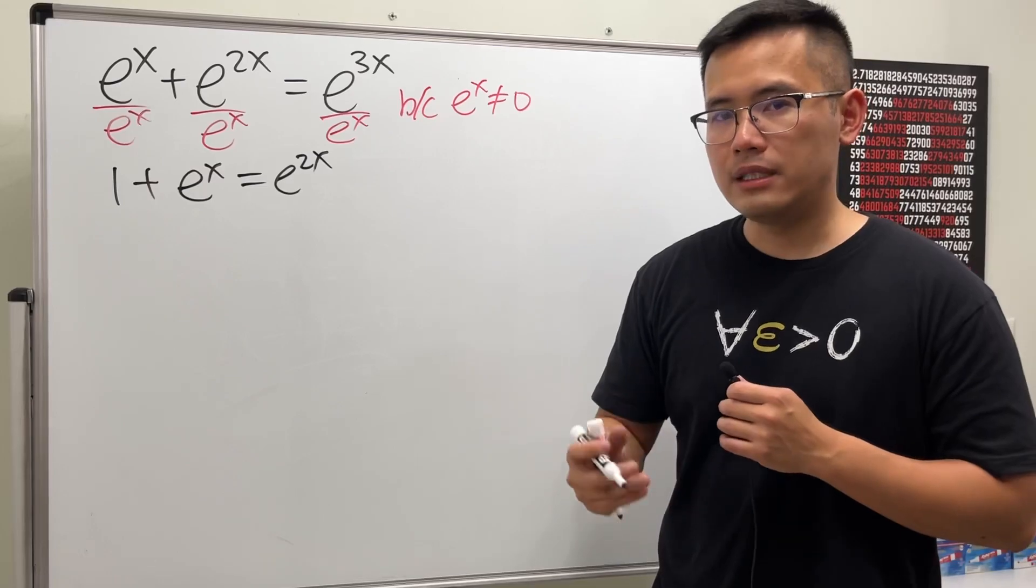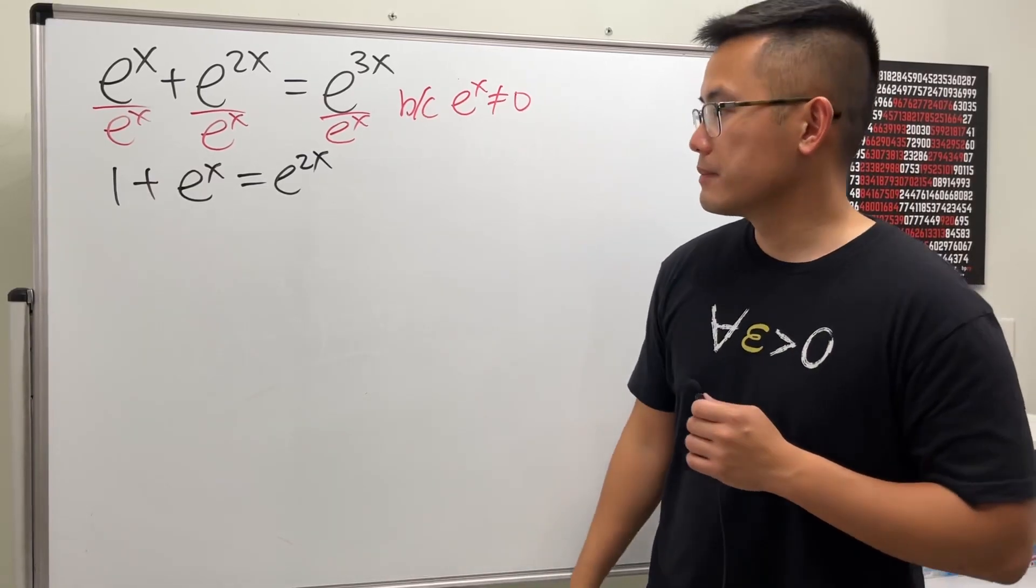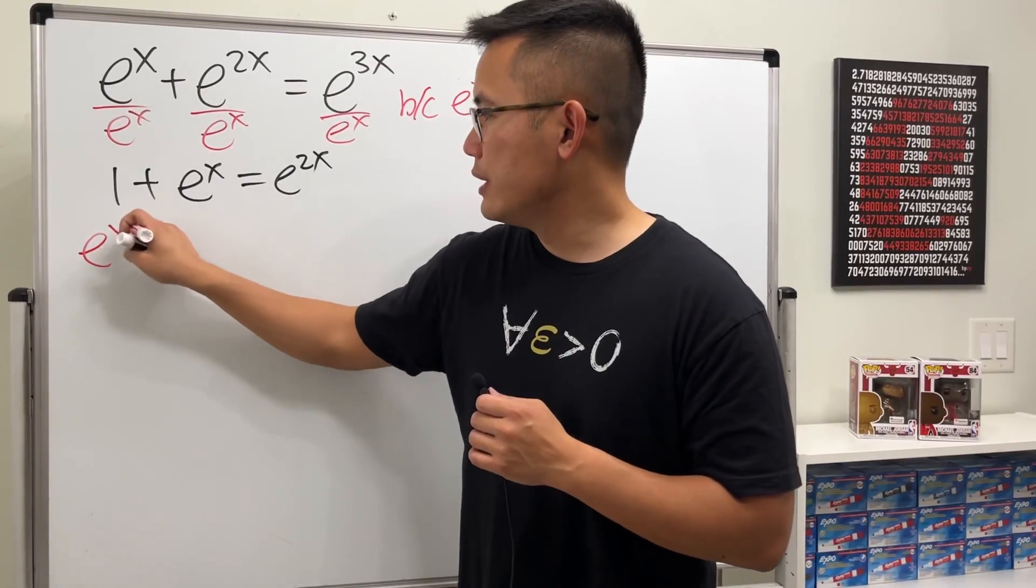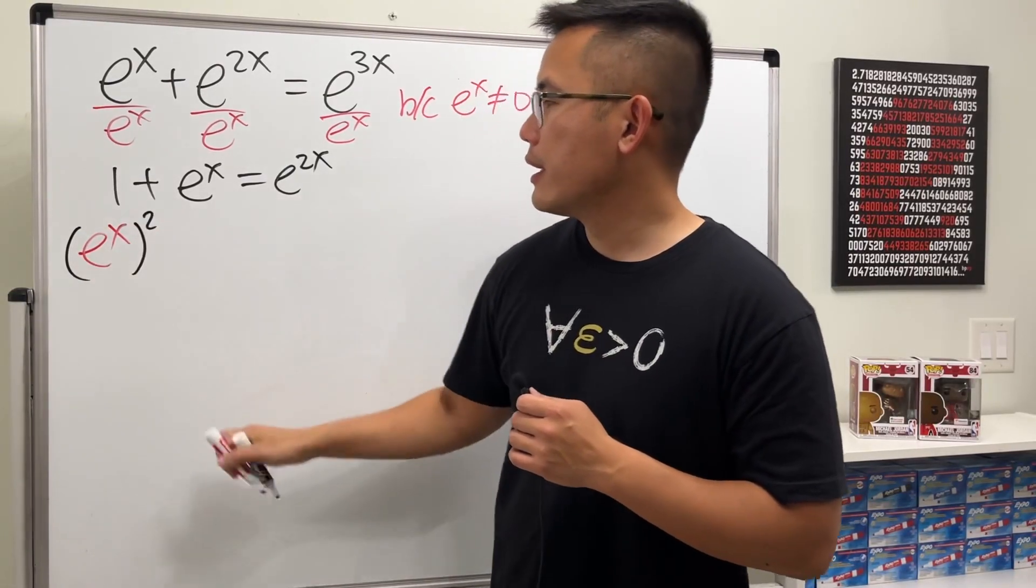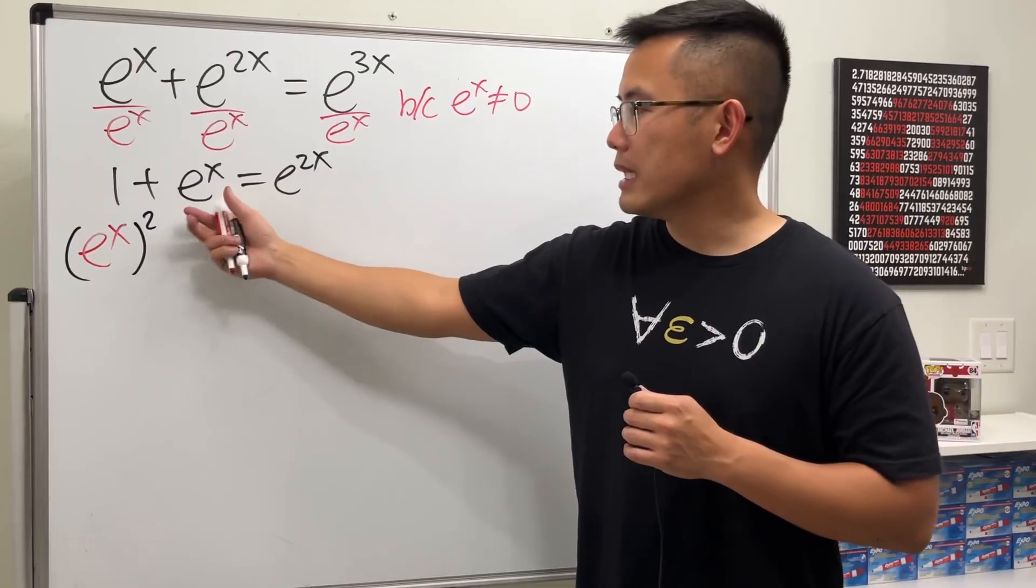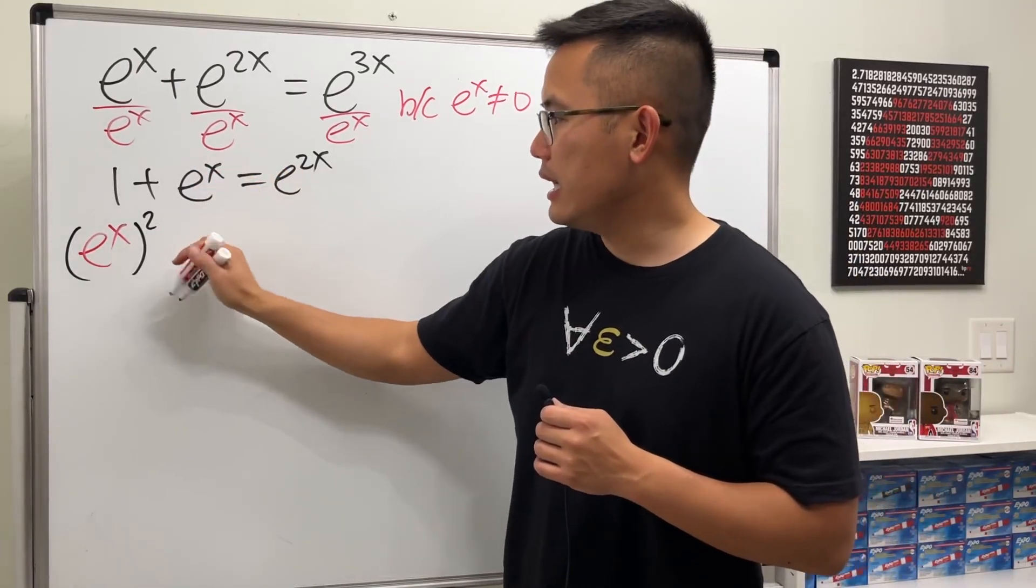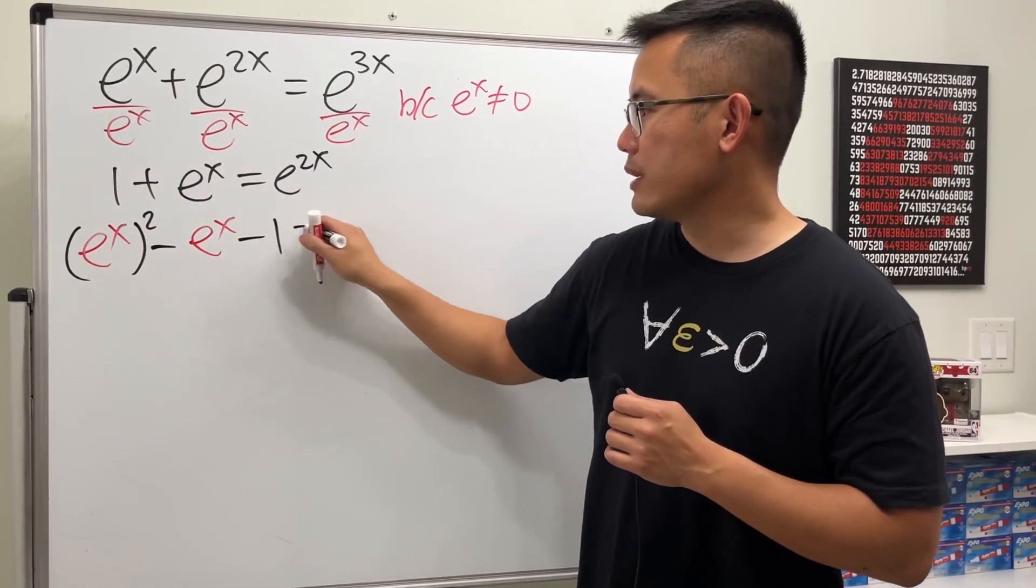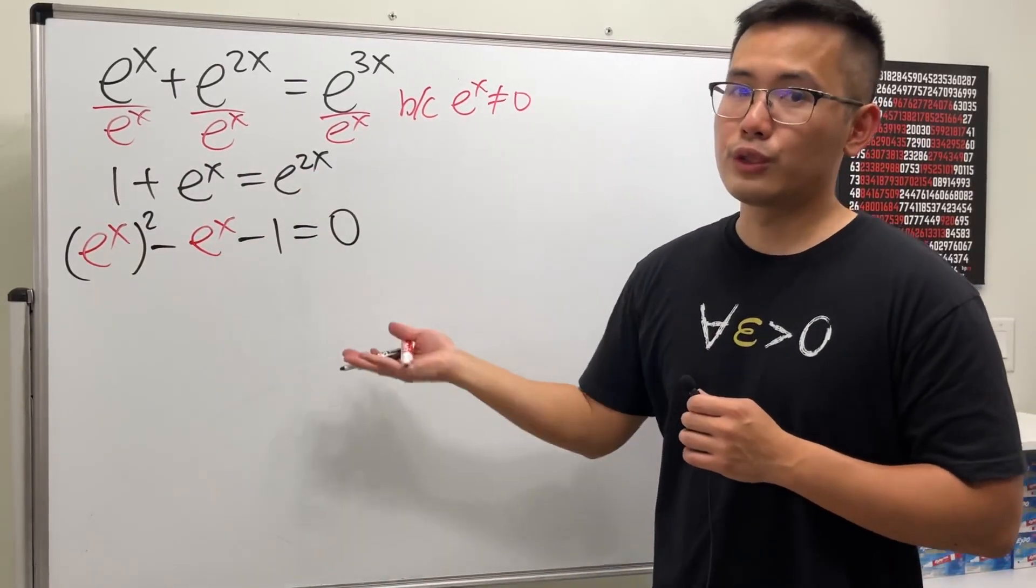In fact, we have a quadratic equation, but it's in terms of e^x. What do I mean? We can write this as (e^x)^2. This is just e^x, but let's move it to the other side so it becomes negative, and then let's write it as e^x, and let's move that to the other side, which is minus 1.